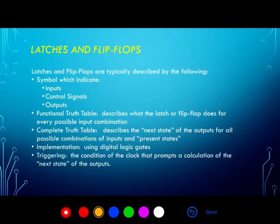The functional truth table is an abbreviated version of the complete truth table and describes the function, or what the latch or flip-flop does for every possible input combination. In contrast, the complete truth table describes the next state of the outputs not only for all possible combinations of the inputs, but for all possible present states of the outputs.